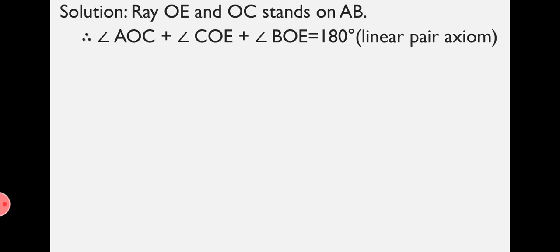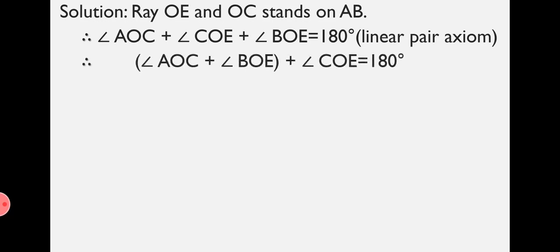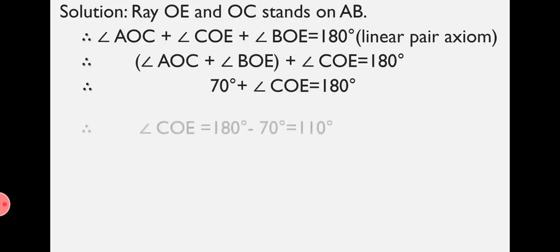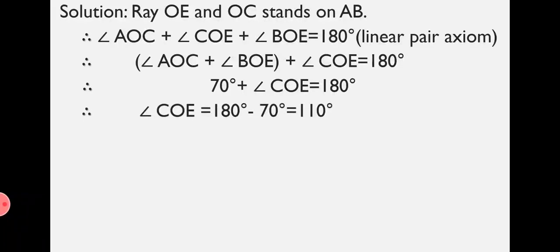Now we rearrange the angles because some summation is already given in the question. We take Angle AOC plus Angle BOE together, plus Angle COE, equal to 180 degrees. Inserting the value of Angle AOC plus Angle BOE, that is 70 degrees, plus Angle COE equals 180 degrees. Therefore, Angle COE equals 180 minus 70, that is 110 degrees.